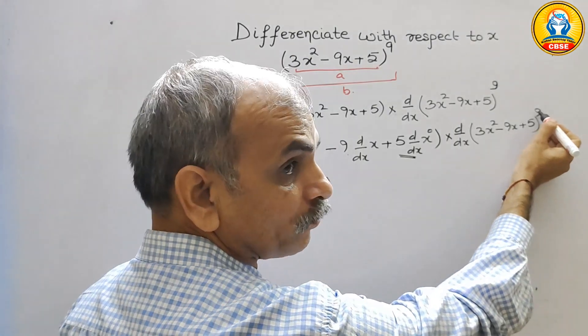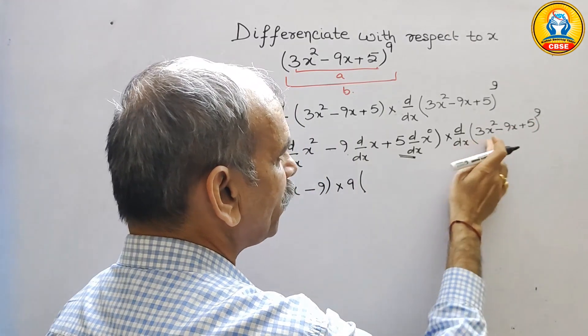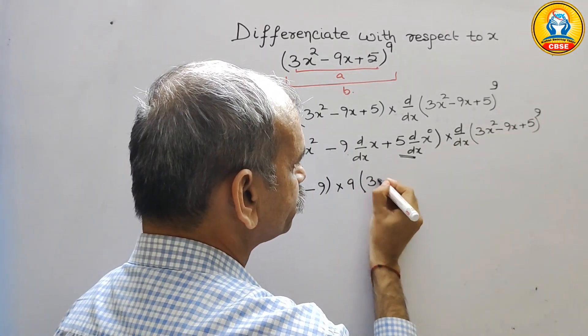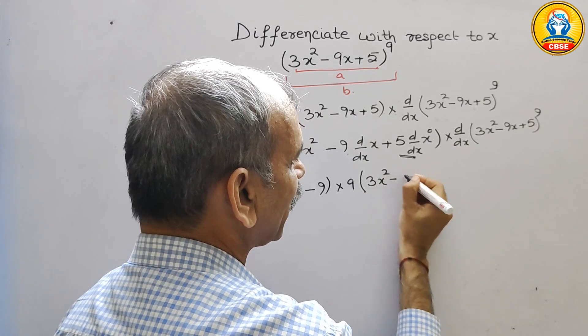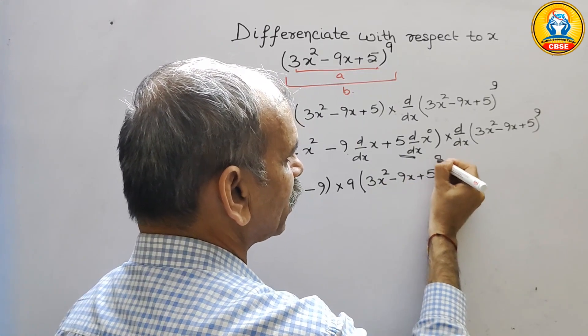Second comes your power of power. The power will be here and remaining 3x square minus 9x plus 5, and power will be 8.